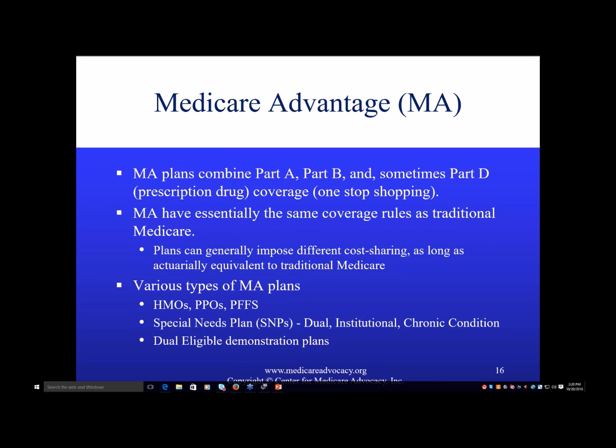Medicare Advantage plans have essentially the same coverage rules as traditional Medicare, but they do have some flexibility to impose different cost sharing — except for a certain number of services — as long as the cost sharing is more or less actuarially equivalent to traditional Medicare. Most types of Medicare Advantage plans are managed care models that restrict enrollees to contracted networks of providers.